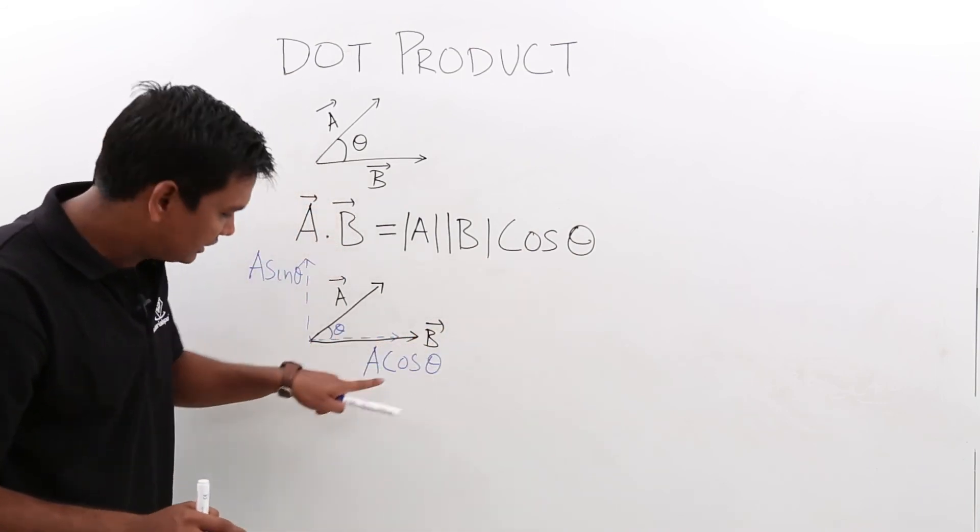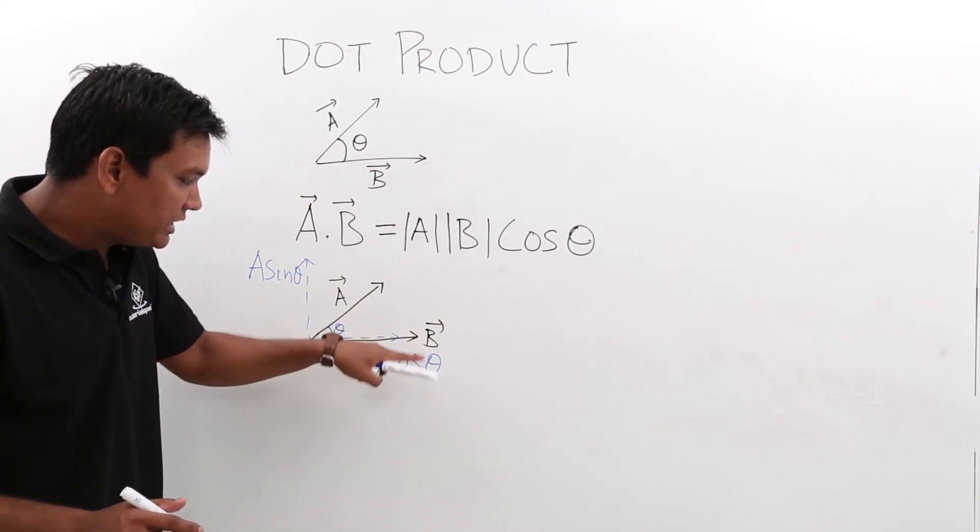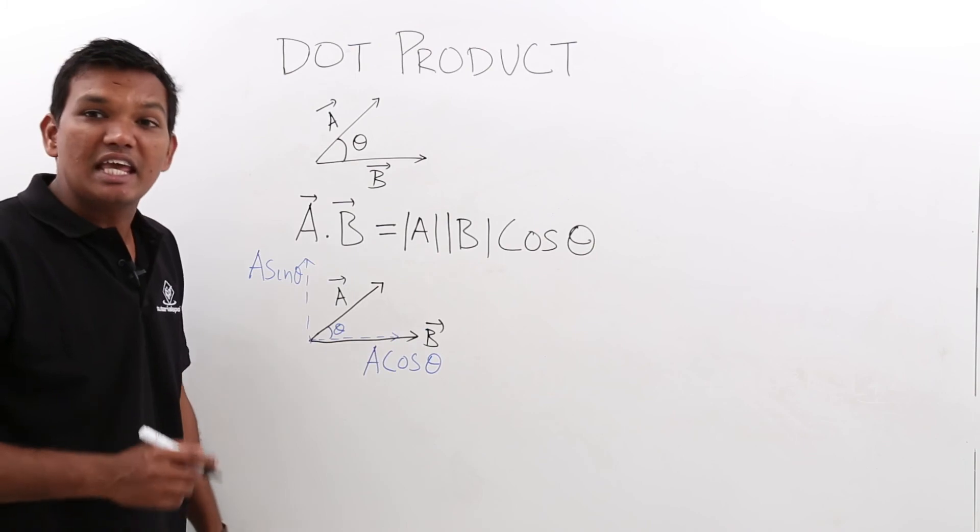So this is B vector, this is A cos theta. So what it looks like along the B direction, the magnitude is A B cos theta.